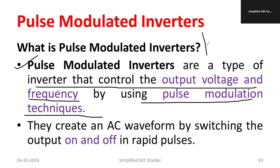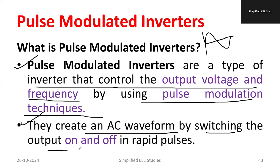The output voltage will be sinusoidal, having both amplitude and frequency. We are going to control both amplitude and frequency. These inverters create an AC waveform by switching the output on and off in rapid pulses — this is exactly what the pulse modulated inverter does.